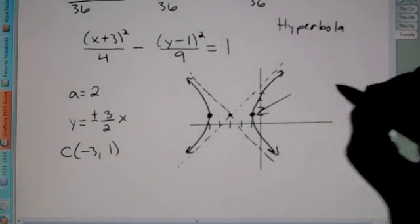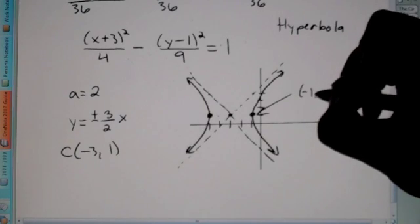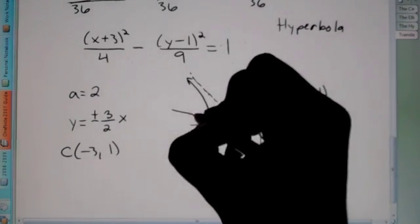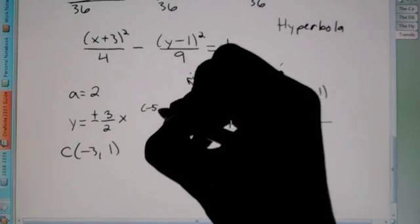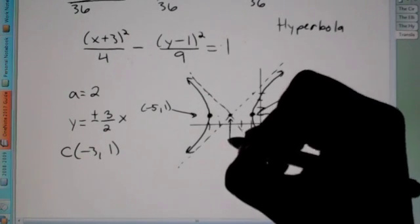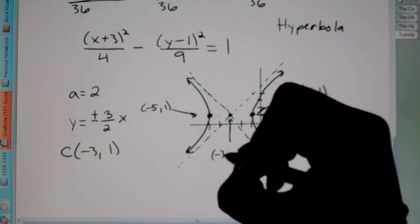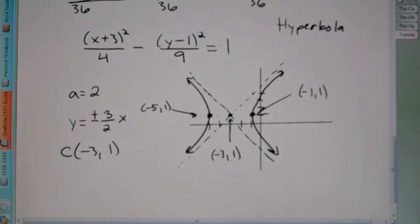So there you go. And again, always label. So that coordinate is negative 1, 1. This coordinate is 1, 2, 3, 4, 5. Negative 5 and up 1. And our center, we said, was negative 3, 1. So that is how we graph a hyperbola in which the center is not at the origin.